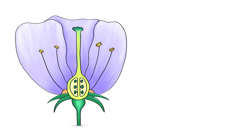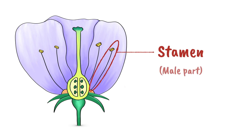Most flowers have both male and female parts. This part here is the stamen, the male part of the flower. You can see four stamens on this diagram.